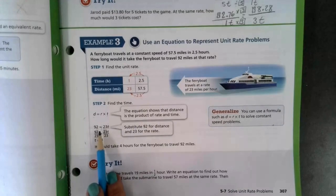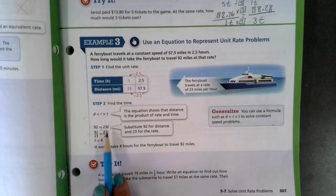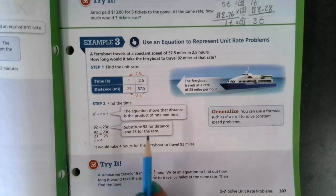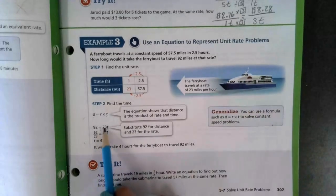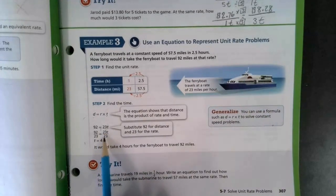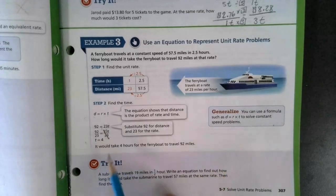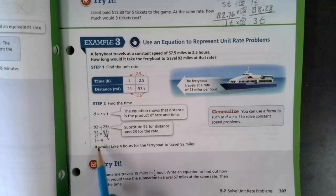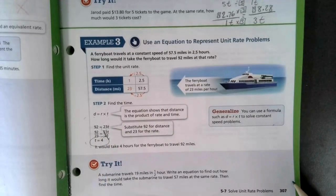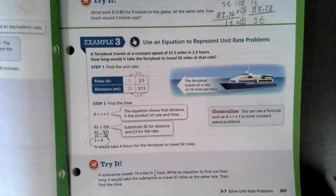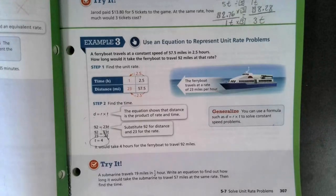So when I plug in 92 equals 23 times our time, I can set it up and solve. I want to get the T by itself. So this is showing I would divide both sides by 23 to cancel it out. And then 92 divided by 23 is four. So it would take four hours to go 92 miles.